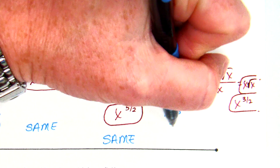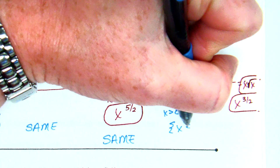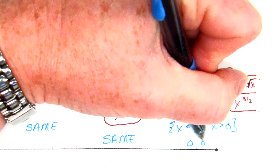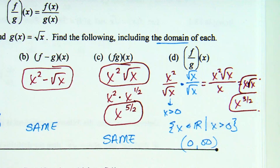Always go back and think about the original, because if there was a fraction in the original, you couldn't have zero in that original denominator. Finding f plus g, f minus g, f times g, f divided by g was not the difficult part — having to stop and think about domain was a little more challenging.